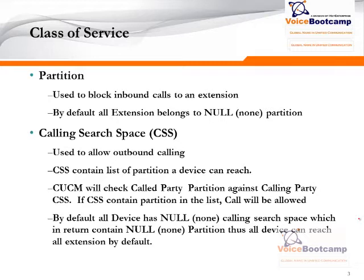Calling search space, on the other hand, is used to allow outbound calls. CSS, or calling search space, contains a list of partitions a device can reach. CUCM will check the called party partition against the calling party CSS. If the CSS contains that partition in the list, the call will be allowed. By default, all devices have a null calling search space, which in return contains the null partition. Thus, all devices can reach all extensions by default.